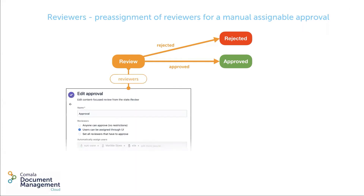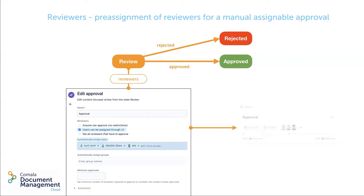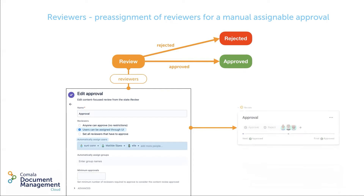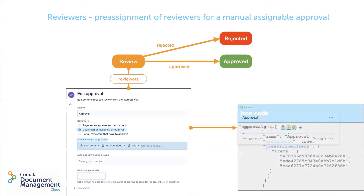You can also pre-assign reviewers for a manually assignable approval. Simply add the users individually or enter a Confluence group name. The reviewer avatars are added to the workflow pop-up, but you can still assign further reviewers. You can also unassign these pre-assigned reviewers, but you must be assigned to be able to undertake the approval decision. In the JSON code, it uses the parameter pre-assigned users.